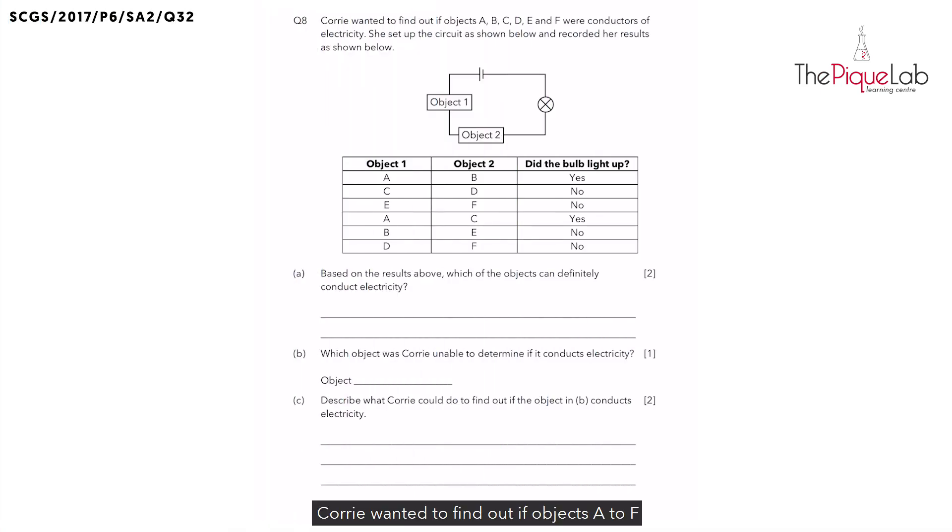Corrie wanted to find out if objects A to F were conductors of electricity. She set up the circuit as shown below and recorded her results in the table. Let's highlight the situations when the bulb lit up. So we have in line number one and line number four.